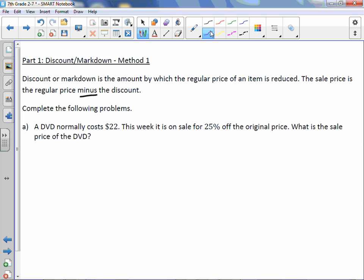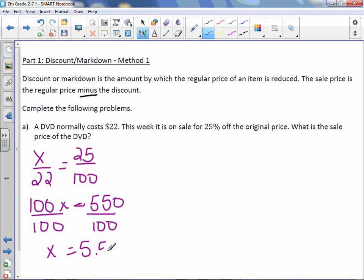I'm going to show you two different ways to do this. You choose your favorite method and stick with it. So the price of the DVD is $22, which is our whole amount. We want to know what 25% of that is. So we use our percent proportion, cross-multiply. 100X equals 550. Divide both sides by 100. You get X equals $5.50, and this is a discount. So you take your price of $22 and subtract the discount, which gives you a sale price of $16.50.